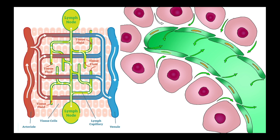Lymph capillaries are physiologically well suited to their job, being made of overlapping endothelial cells that form a series of flap-like valves that only open in one direction, allowing interstitial fluid to flow into the lymph vessels. Once in the lymphatic system, lymph moves towards the area of lowest pressure in the blood circulatory system so that it can be returned to the blood. This is important — otherwise your blood volume would steadily decrease and you would ultimately die.